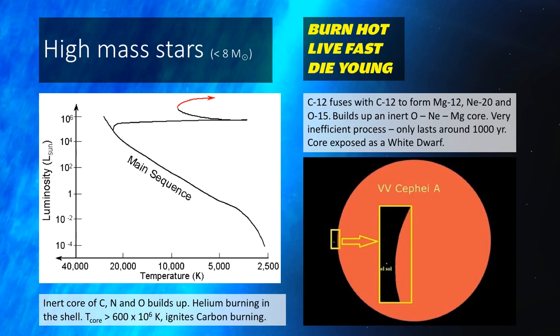For example, the star VV Kefi Alpha has a radius of approximately 1,000 astronomical units. That puts it well beyond the orbit of Saturn, if you placed it into our own solar system. This final stage, by the way, is very inefficient, large amounts of energy is lost through things like neutrinos, and it only lasts about 1,000 years.